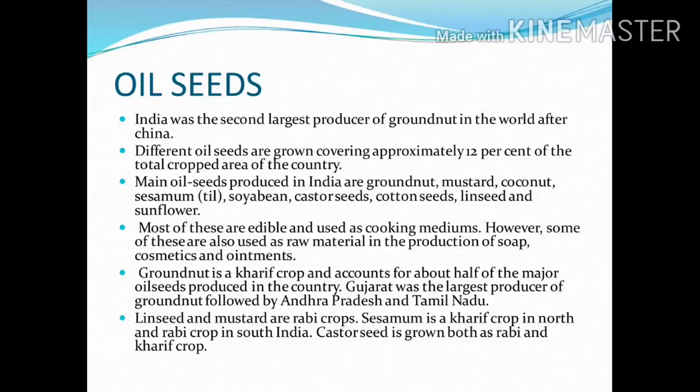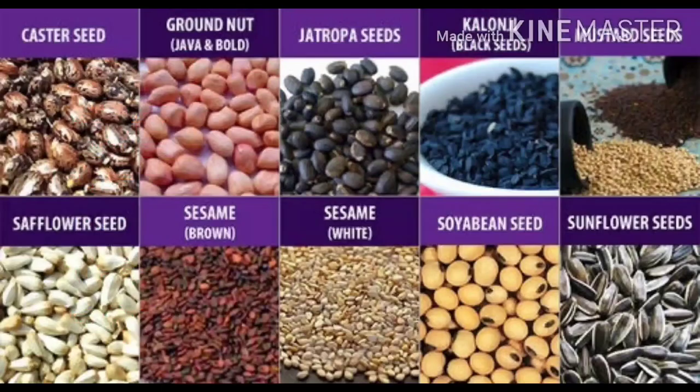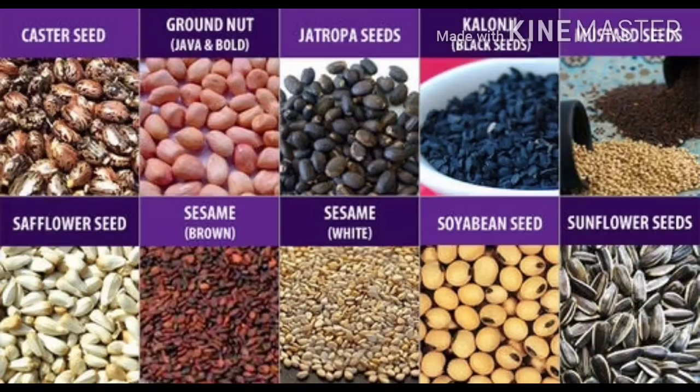Groundnut is a Kharif crop and accounts for about half of the major oilseeds produced in the country. Gujarat is the largest producer of groundnut, followed by Andhra Pradesh and Tamil Nadu.